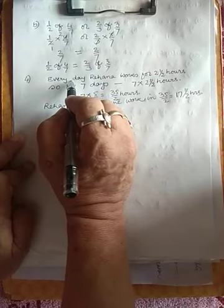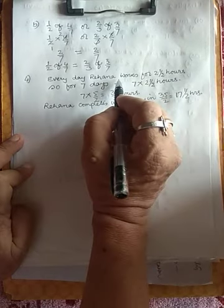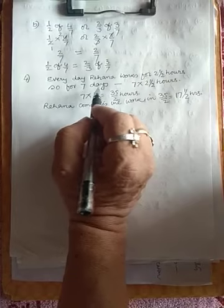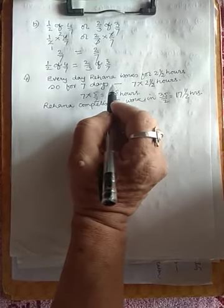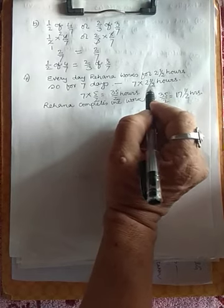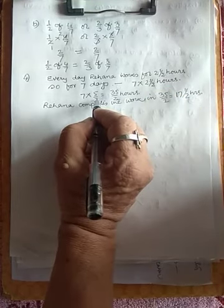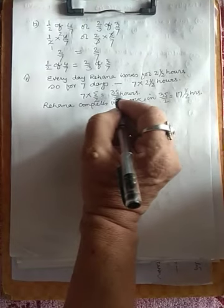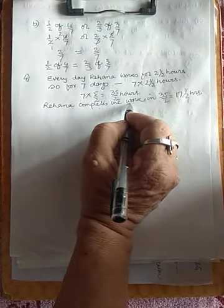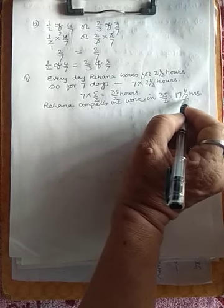To summarize: every day Rahna works for 2 and a half hours. In order to complete the work she took 7 days. So for 7 days, 7 into 2 and a half is 7 into 5/2 = 35/2 hours, which equals 17 and a half hours.